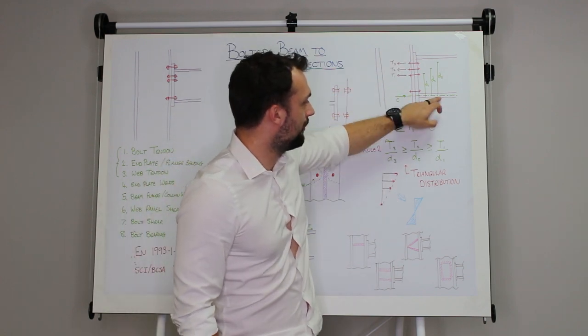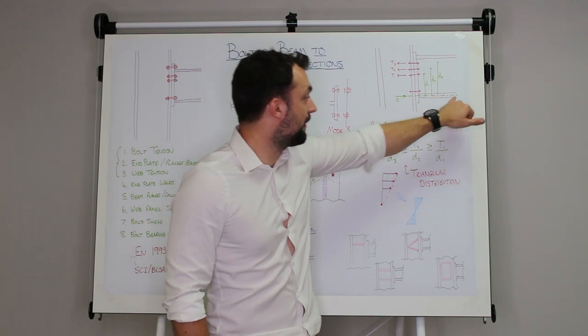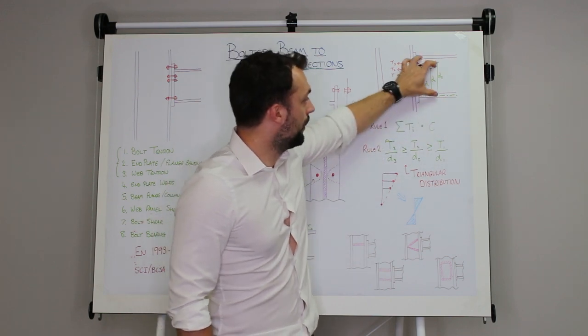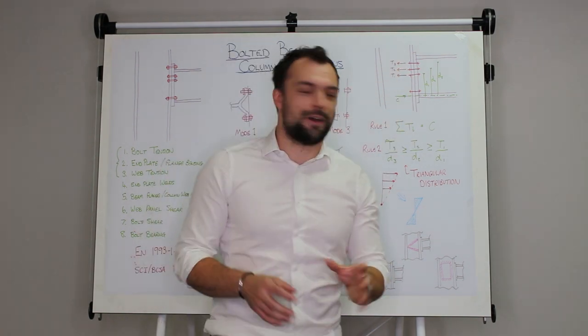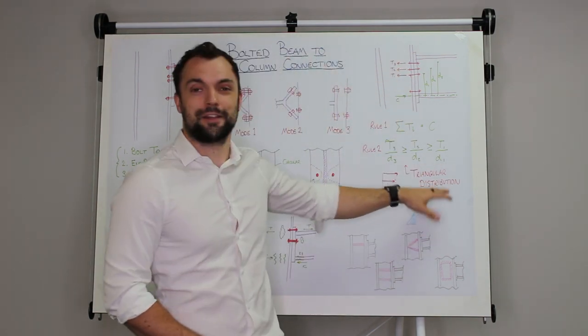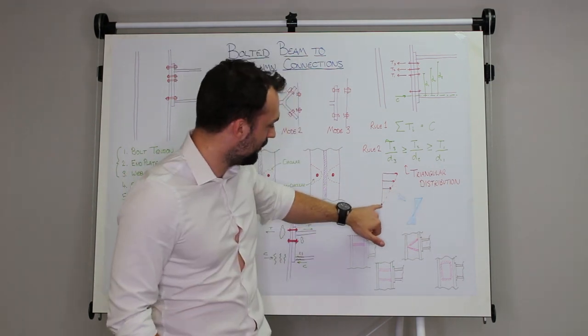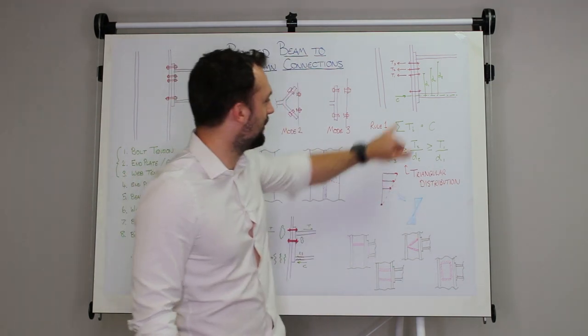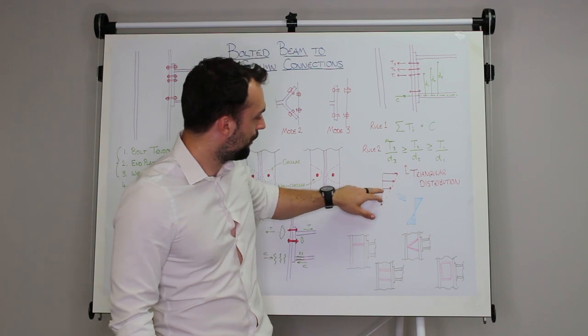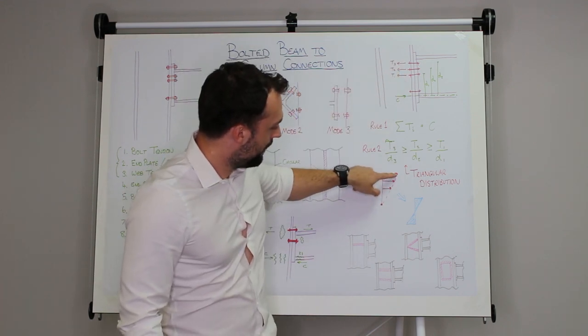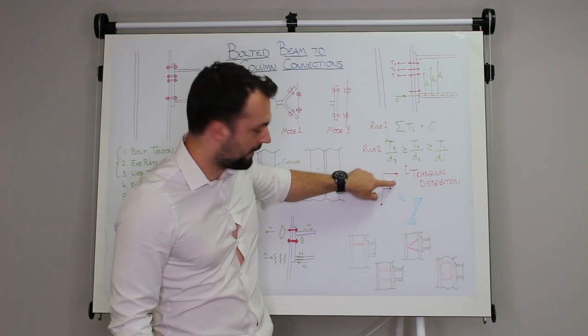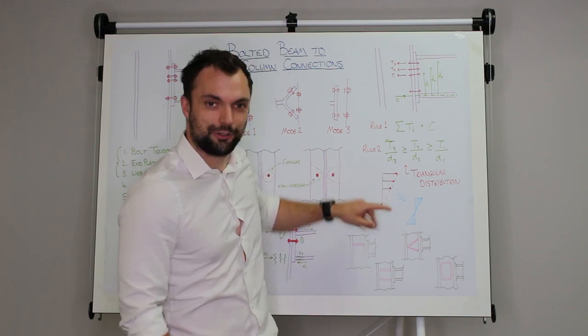The second rule is that each of these tensions over the distance from this compression flange will be equal, or each one will be less than the one above. This is a mathematical way of expressing this triangular distribution. So if you imagine that the point of rotation is this compression flange here, the three bolts above in this example, that proportion compared to that proportion compared to that proportion will make a triangle.